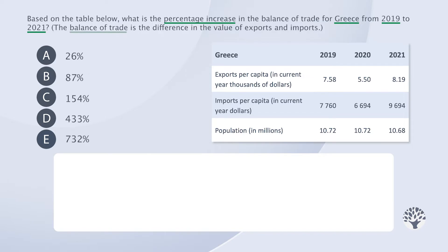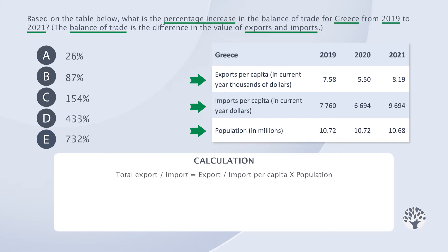The indicator we need for the calculation is the balance of trade, which is the difference between exports and imports. Looking at the table, we have exports per capita in current year thousands of dollars, imports per capita in current year dollars, and the population in millions. We'll clearly be working with per capita values. To find total exports and imports, we need to multiply the per capita value for each by the population — that is, total exports equals exports per capita multiplied by the population, and total imports equals imports per capita multiplied by the population.